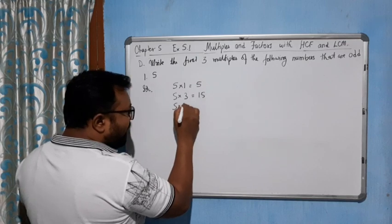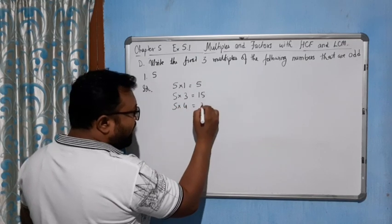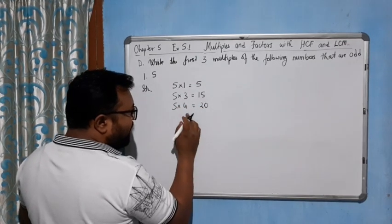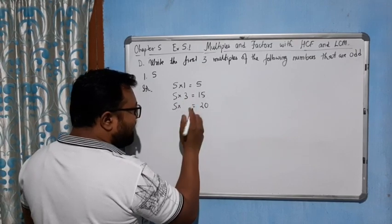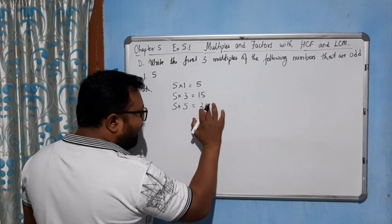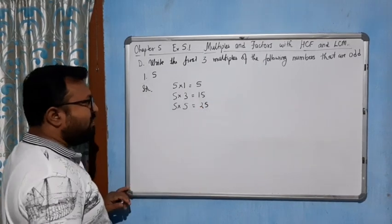It is 3. 5 times 3 is 15, so it's an odd number, so it's okay. Now 5 into 4 gives you 20, so we will not take this because 20 is an even number. So we will move to the next number, 5 times 5 is 25.